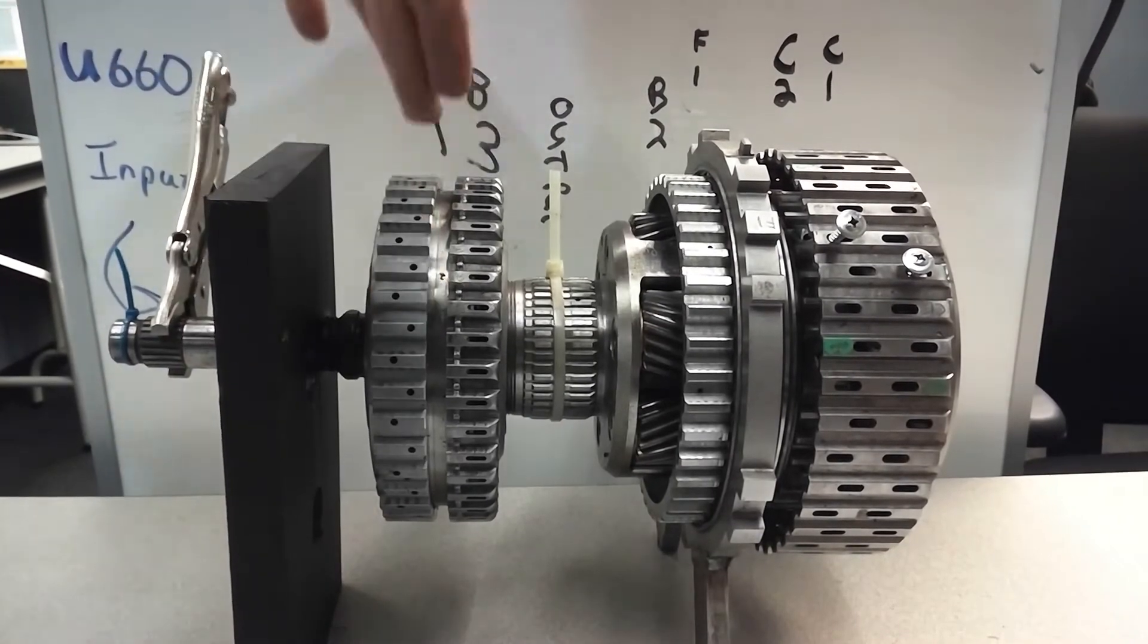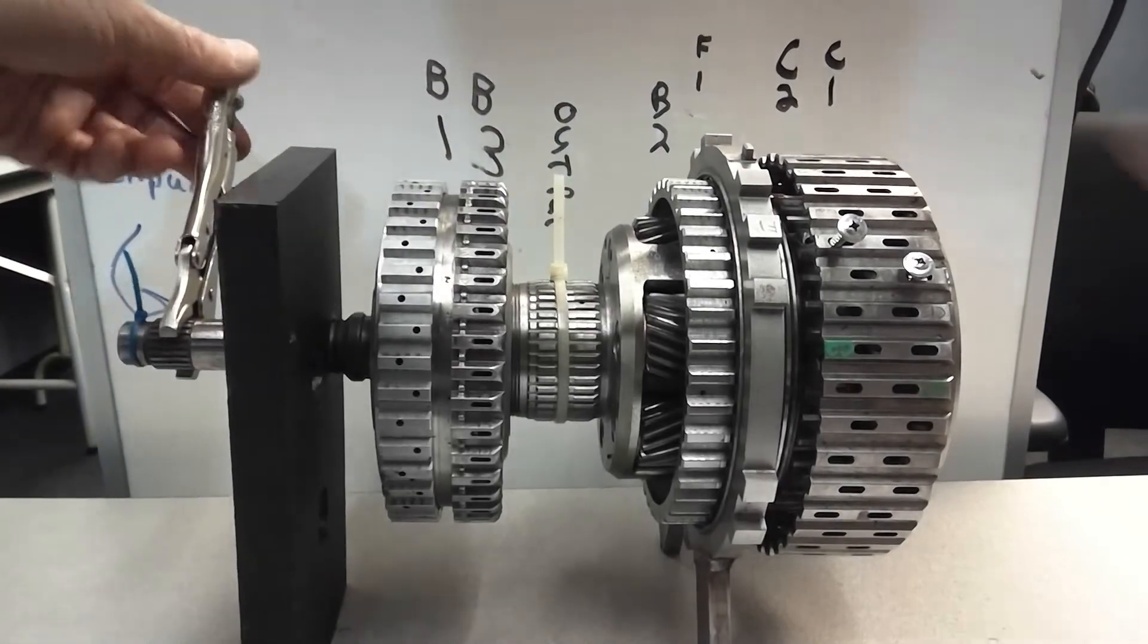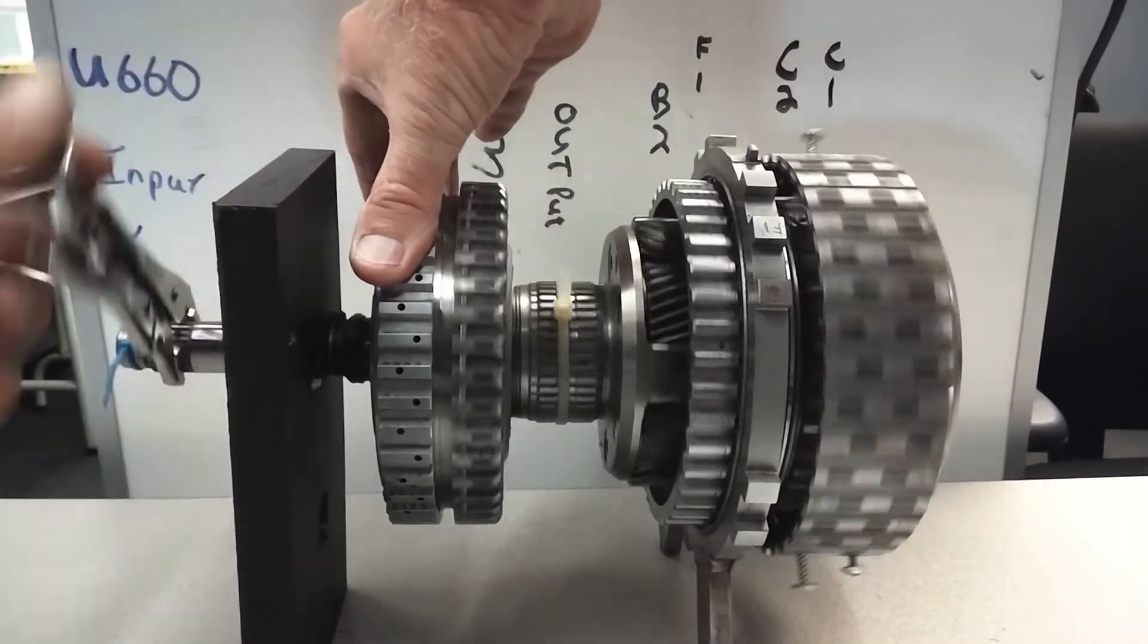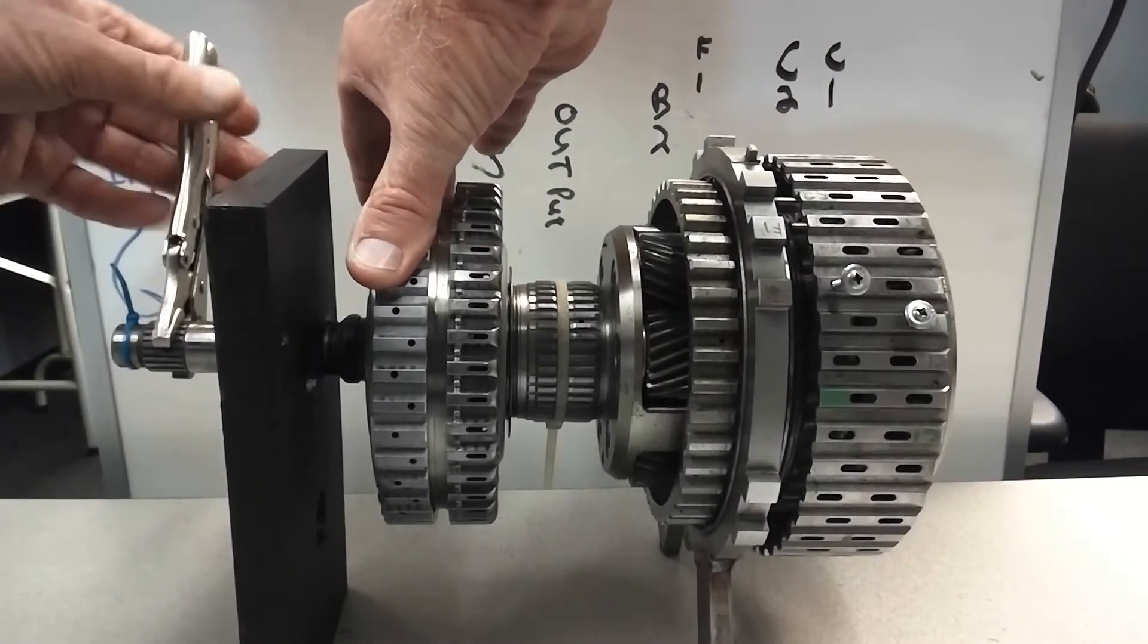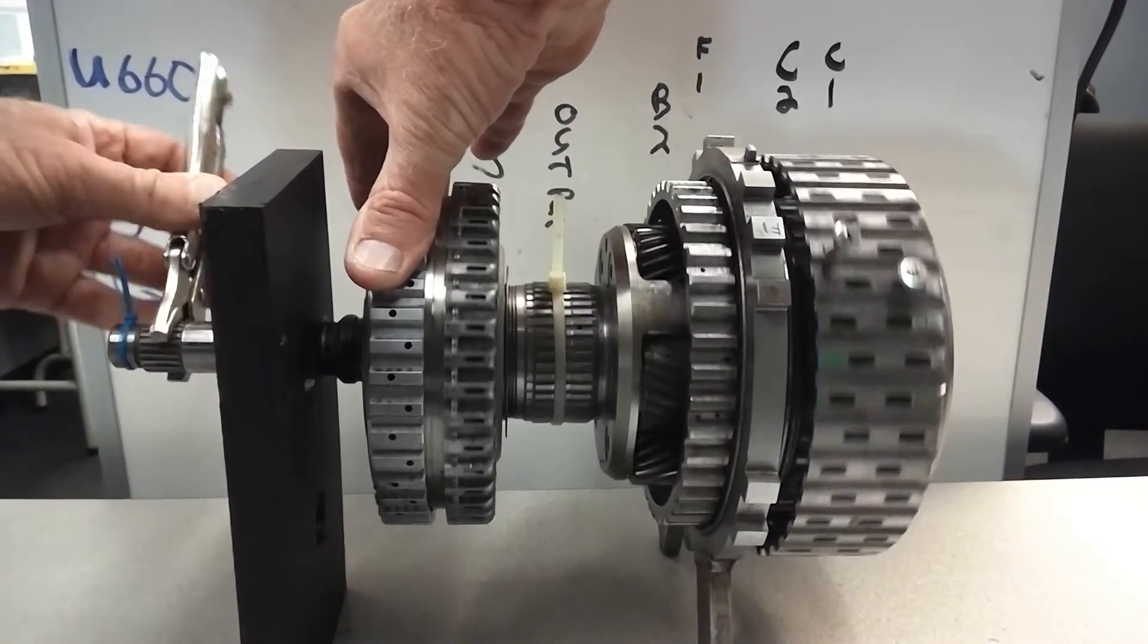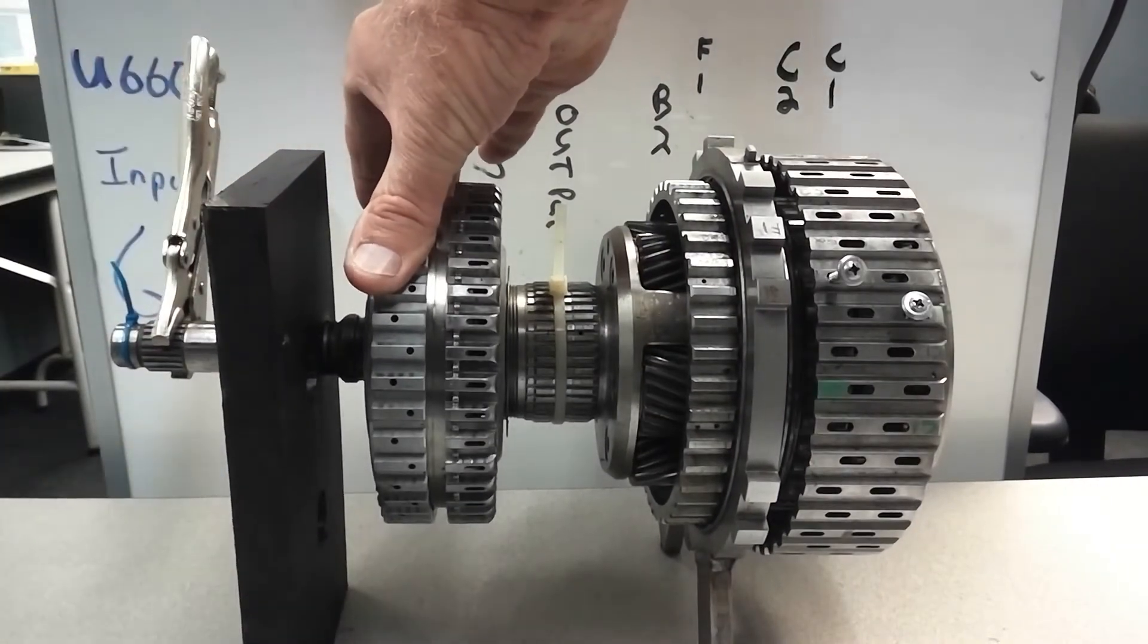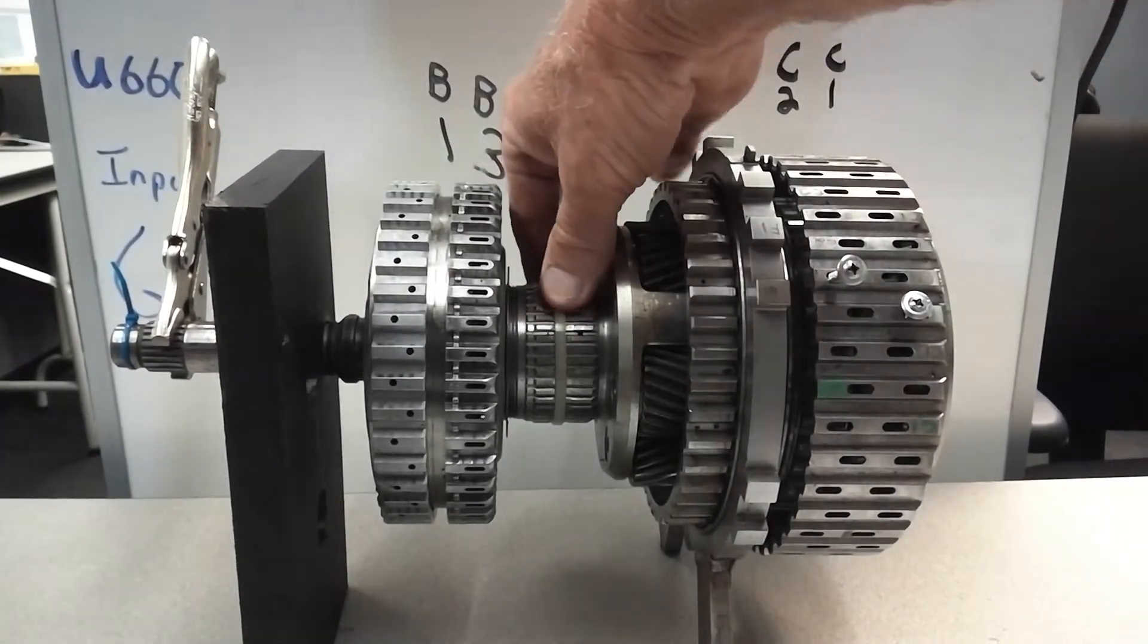So this is B1. It locks this to the case. And we'll go 1 revolution, 2 revolutions. So that's just about the 1.9 that we need.